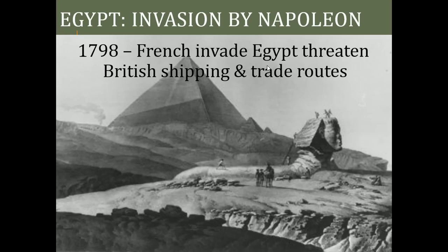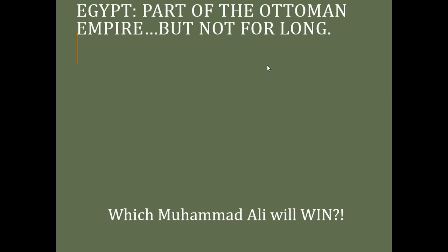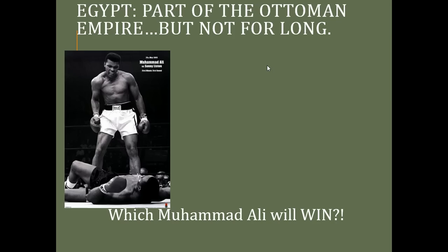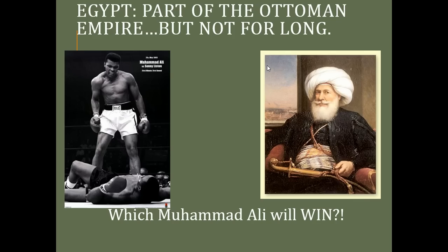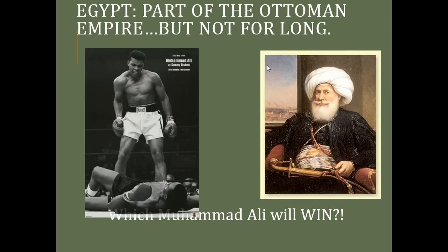We're going to take Egypt as a case study of a group that breaks away from the Ottoman Empire and then attempts to nationalize. Egypt was actually invaded by Napoleon in 1798 — the French invaded to threaten British shipping and trade routes to India. By 1798 Britain was fully committed to the Industrial Revolution and needed those sources of Indian cotton. Egypt at that time was part of the Ottoman Empire, but it won't be for long — this is where Muhammad Ali comes in.